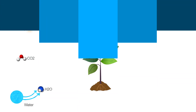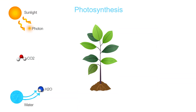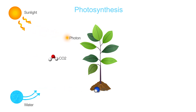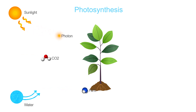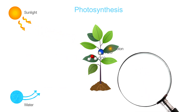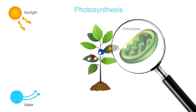Another major difference between animal cells and plant cells has to do with the way plants produce energy. Plants don't need to ingest food in order to survive. In a process called — you guessed it — photosynthesis.